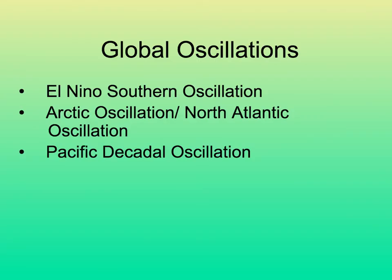There are also things that happen every 8 to 10 to 12 years — global oscillations. We're in the middle of an El Niño right now — an ENSO, El Niño Southern Oscillation. But there are other oscillations too: Arctic oscillations, North Atlantic oscillations, and the Pacific Decadal Oscillation, which occurs every 10 years or so.